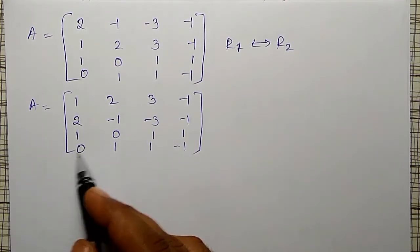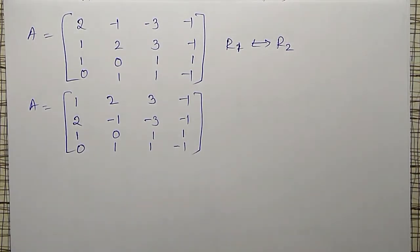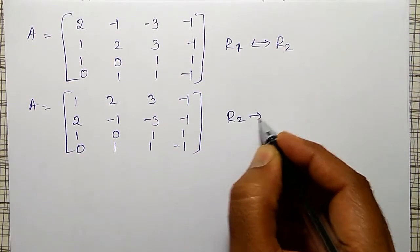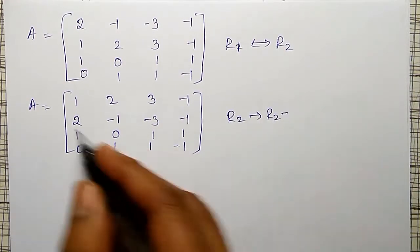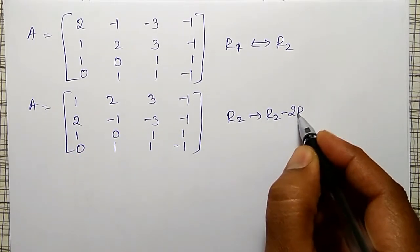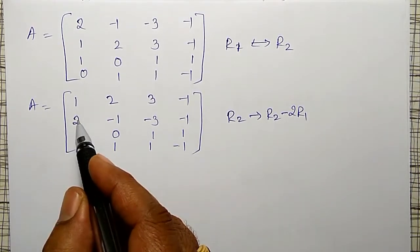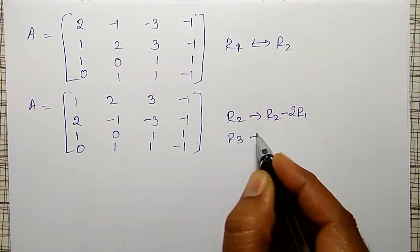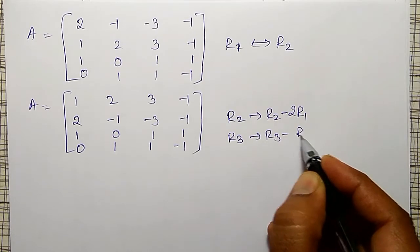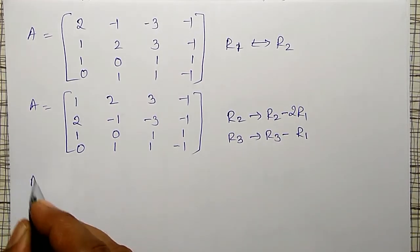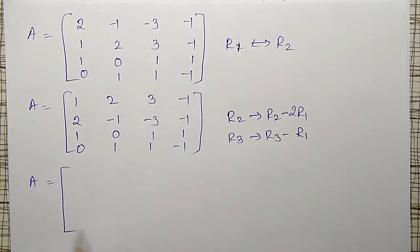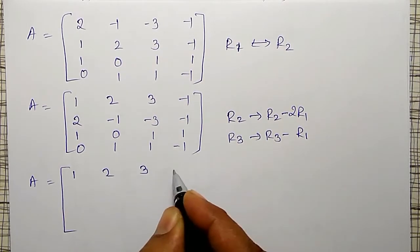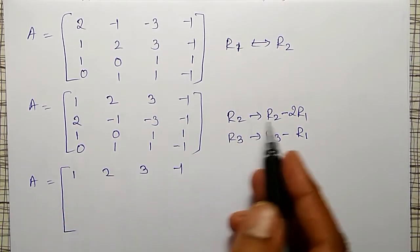Now, these two elements have to be made 0. Therefore I will do the operations: R2 is replaced by R2 minus 2 times R1, then this element will become 0. And to make this element 0, R3 is replaced by R3 minus R1. First row will remain as 1, 2, 3, −1.